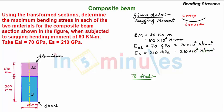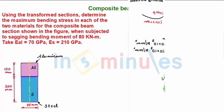And in this problem we have been asked to find first maximum bending stress sigma_max in aluminium, second maximum bending stress sigma_max in steel. So now let's solve the problem. Solution.